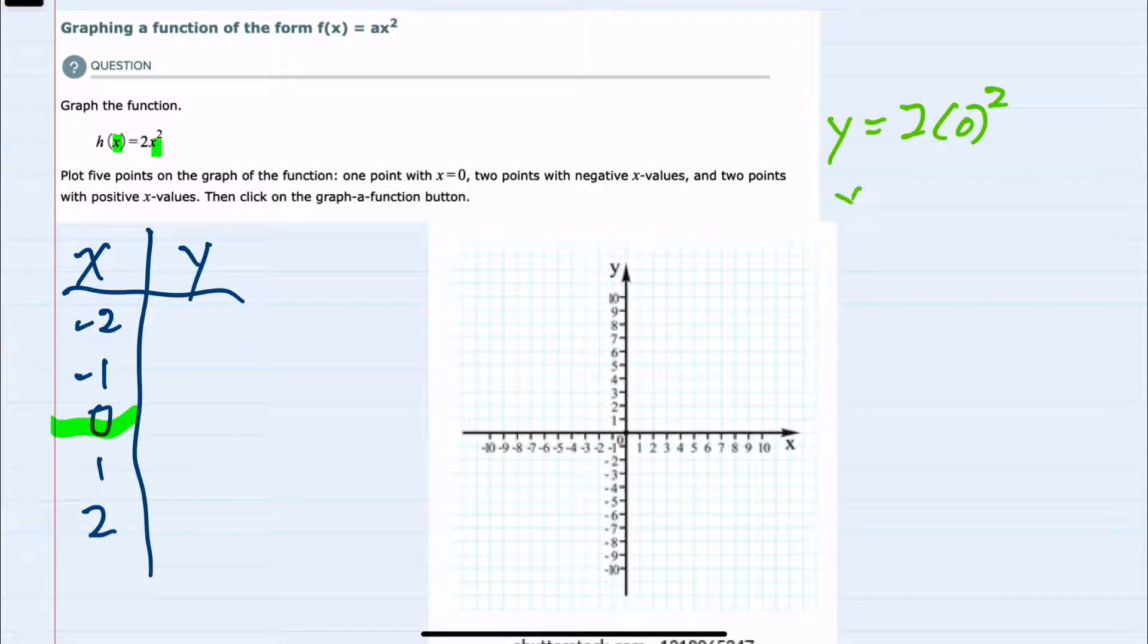Now, following the order of operations, doing the exponents first, zero squared is still zero, so this would be 2 times 0, which is 0.